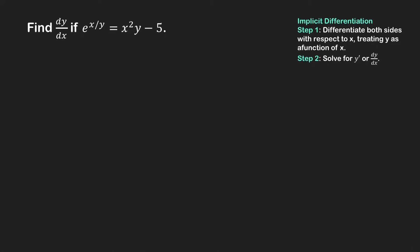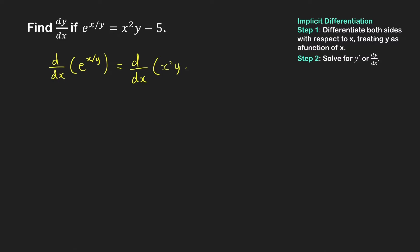Let's now solve the two problems. First step: we differentiate both sides with respect to x. We compute the derivative of the left-hand side, which is e raised to x over y, equal to the derivative of the right-hand side, which is x squared y minus 5. The derivative of e raised to a function u is e raised to u times the derivative of u. Our u is x over y, so we multiply e raised to x over y by the derivative of x over y with respect to x.